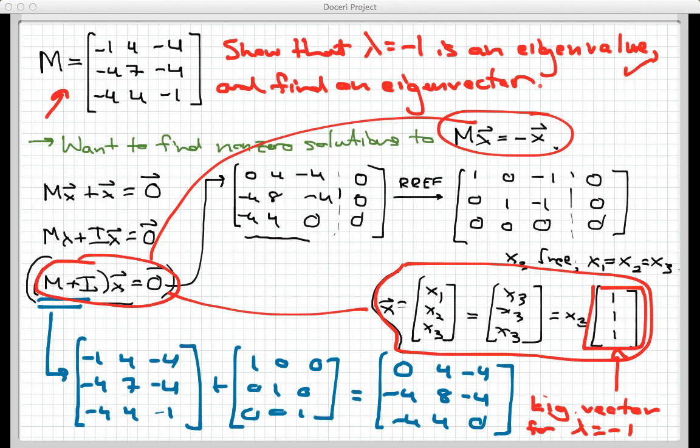Okay, so that's an example of finding an eigenvector corresponding to a given eigenvalue for a 3 by 3 matrix where finding the general solution for this homogeneous system is really the key step.